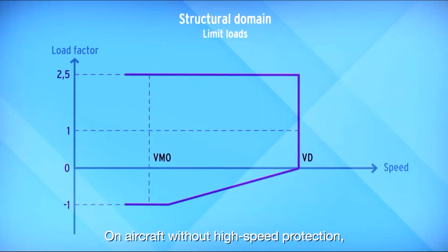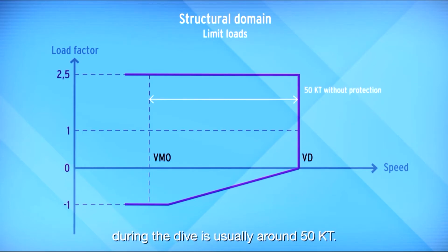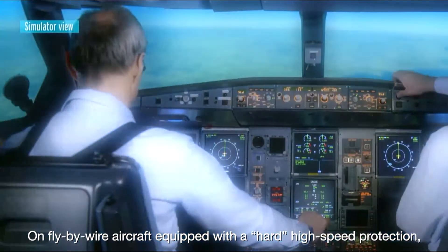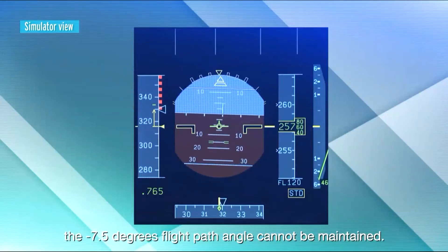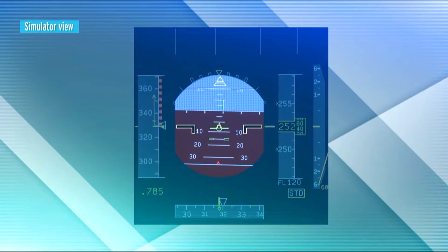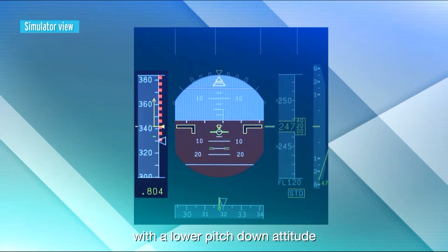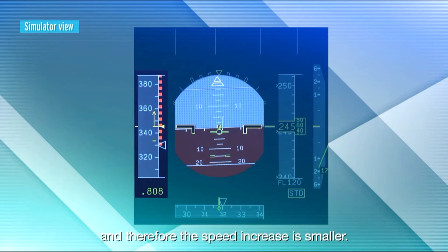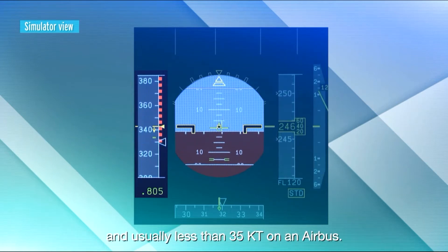On aircraft without high-speed protection, the difference between VMO and the maximum speed reached during the dive is usually around 50 knots. On fly-by-wire aircraft equipped with a hard high-speed protection, the minus 7.5 degrees flight path angle cannot be maintained. The final part of the dive is performed with a lower pitch-down attitude, and therefore the speed increase is smaller.